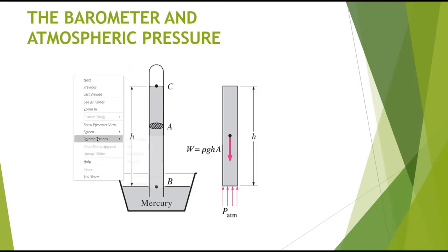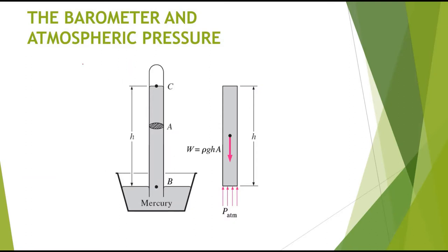We have studied different units used for measuring pressure, and the value of atmospheric pressure: P_atm is equal to 101,325 Pascals. The device used for measuring atmospheric pressure is known as a barometer.